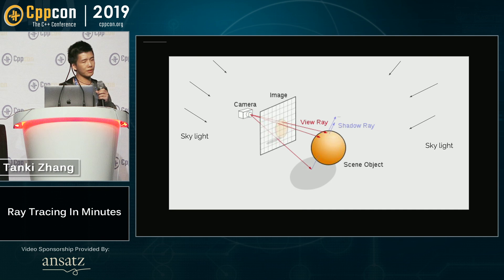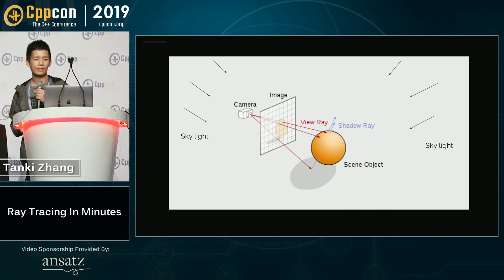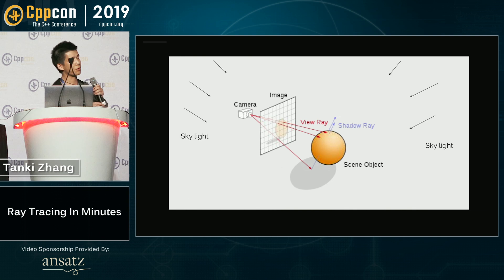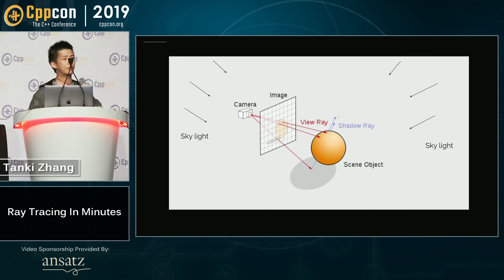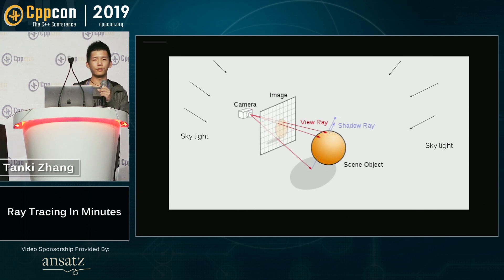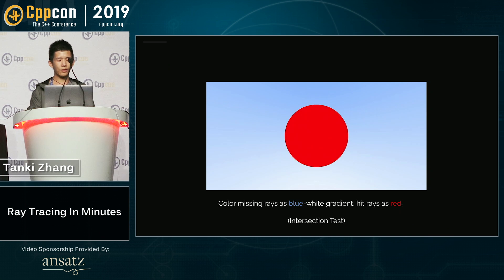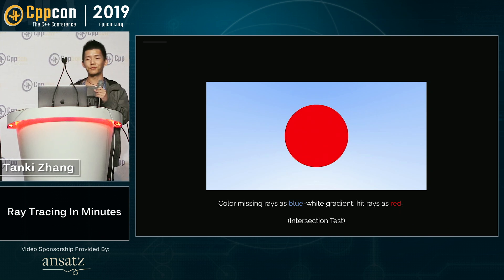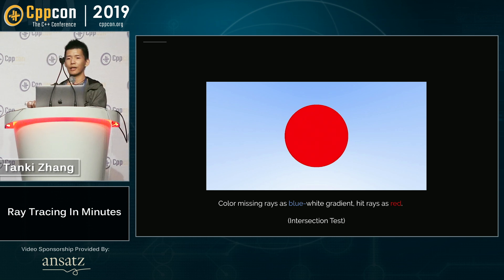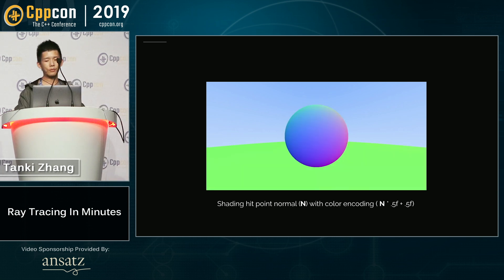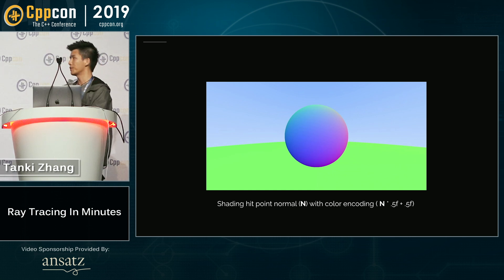If there's a hit, we can decide to compute the light interaction and determine the final pixel color for that pixel. To simplify the problem, here's what we're going to render: a sphere sitting on the ground in an open space. There are no extra light sources, just skylight. If we do the intersection test and shade all pixels that are hit as red, and then evaluate and visualize the surface normal information, this is what we can get.